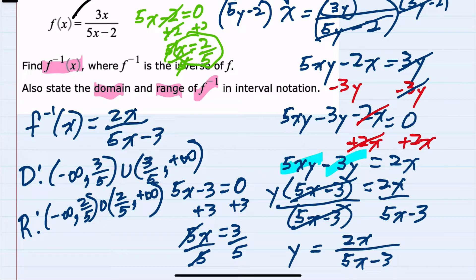So we have found the inverse function. We found the domain of the inverse function by excluding where that denominator would be 0. And we found the range of the inverse function by finding the domain of the original function.